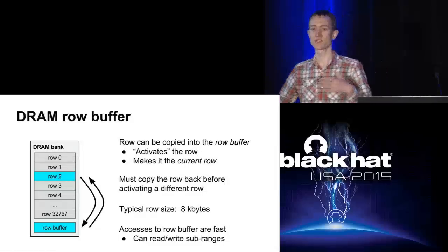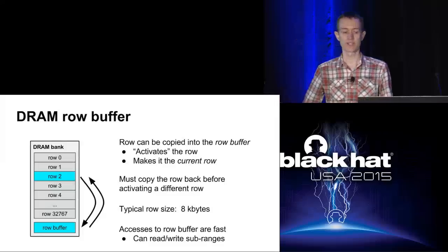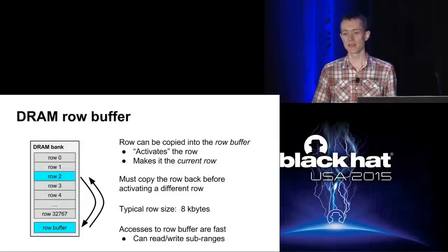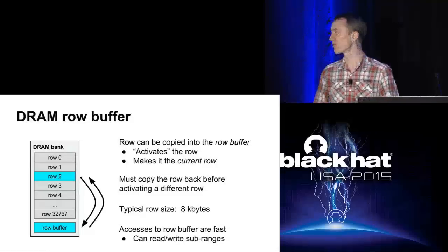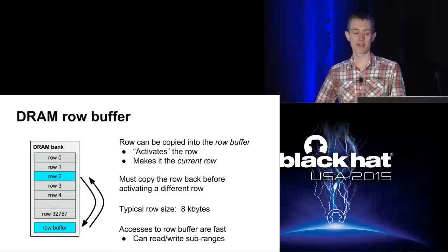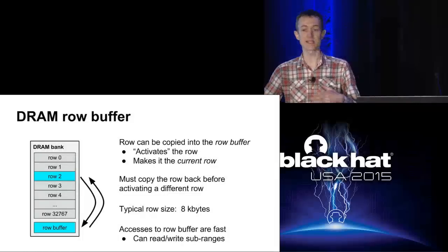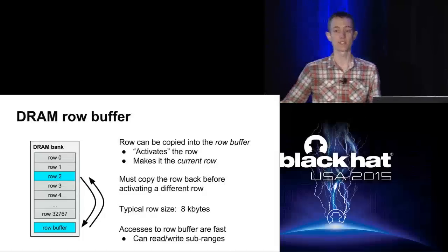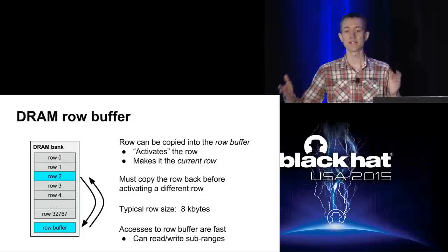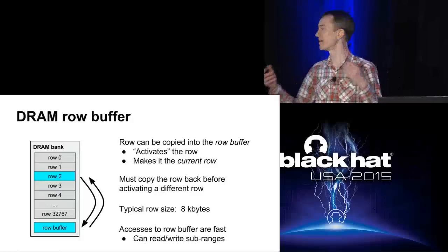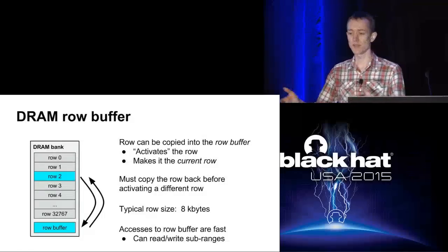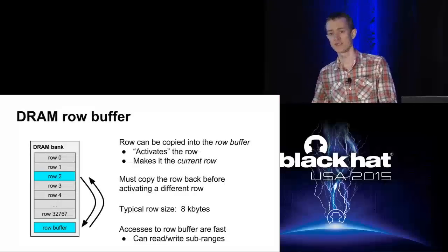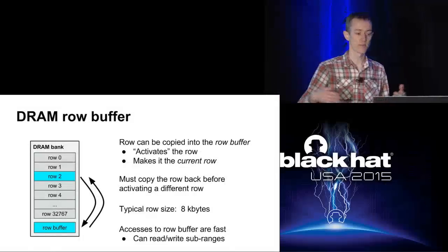Activating a row connects those cells to something called the row buffer, which drains the charge from the cells and copies the row's data into the bank's row buffer. The system can then read or write the contents of the row buffer. If the system wants to access a different row, the DRAM bank first has to write the data in the row buffer back into the row it came from, putting charge back into the row cells. Basically a bank of DRAM has a notion of a currently activated row, which acts like a cache - accessing the current row is fast, accessing a different row is somewhat slower.